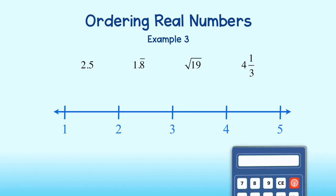Using my calculator, I see that the square root of 19 is approximately 4.36. For this number, I just decided to round, since the other numbers are not very close to it. 4 and 1 third is approximately 4.33.